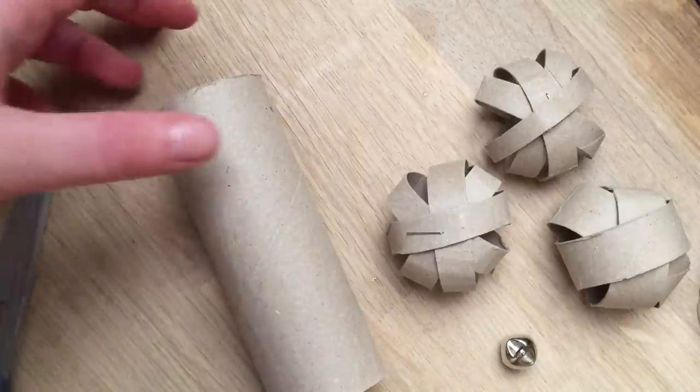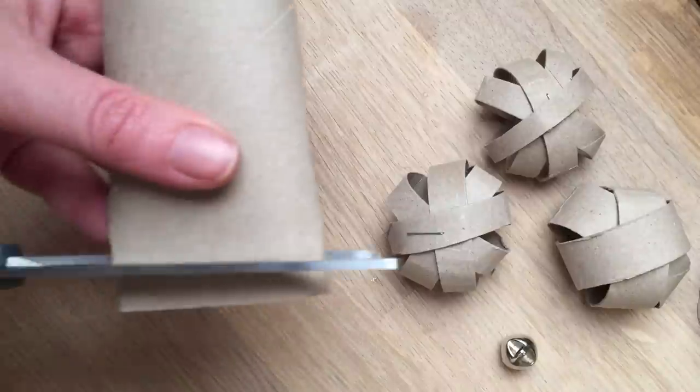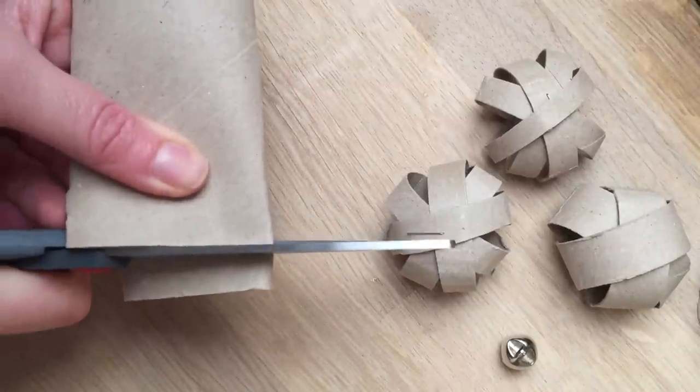So the first thing you need to do is take a loo roll and cut some thin strips off the end. Here we go. I cut four. Depends how thick you do it, actually.